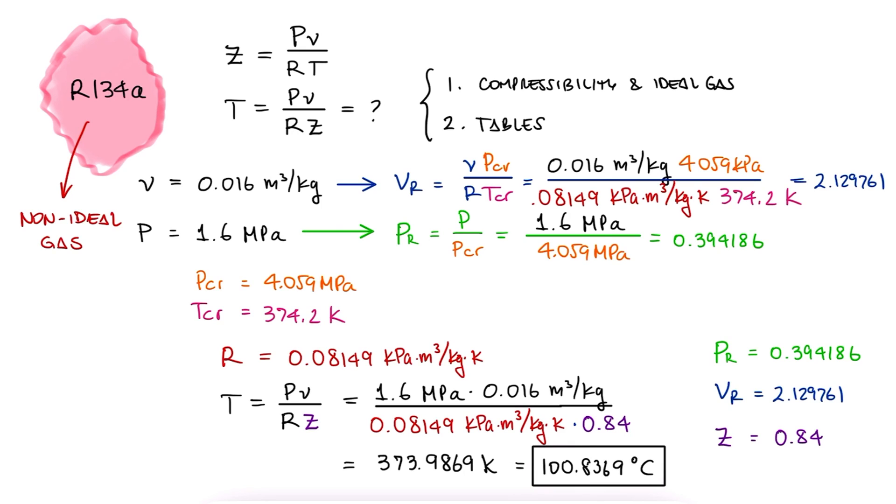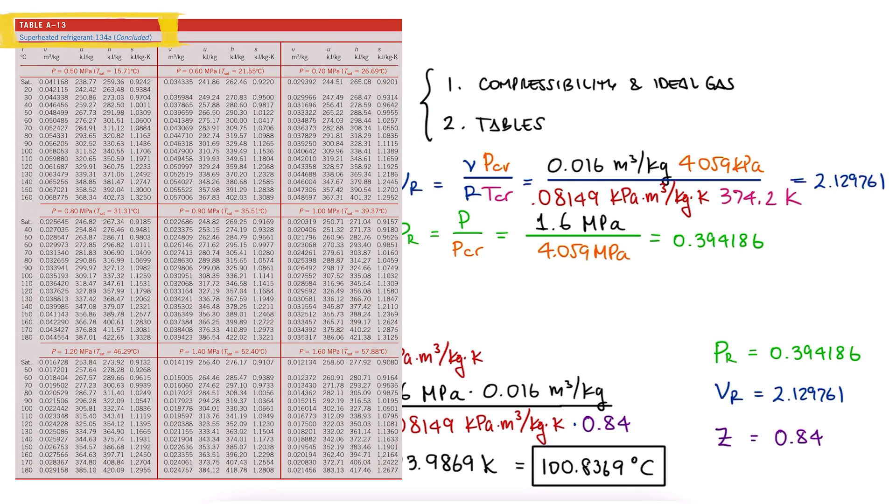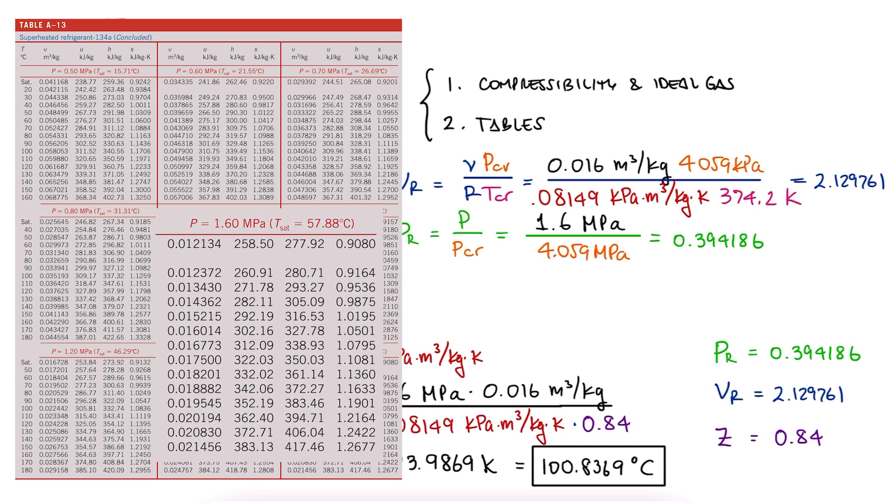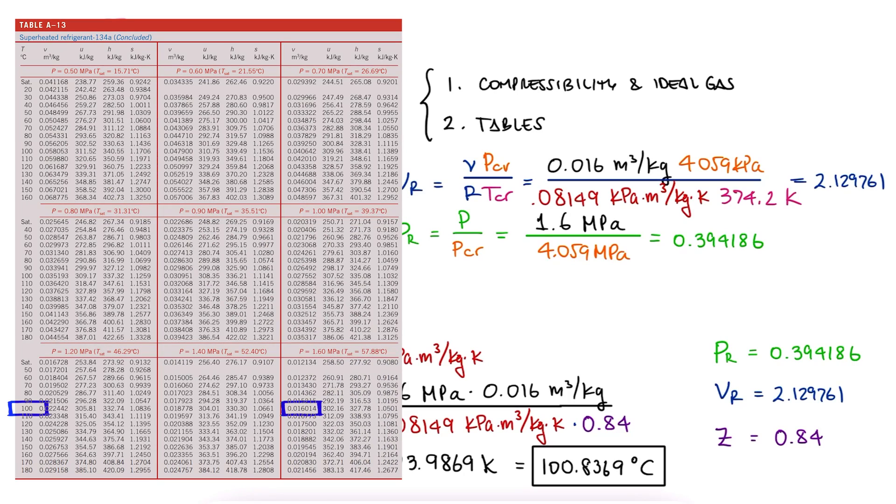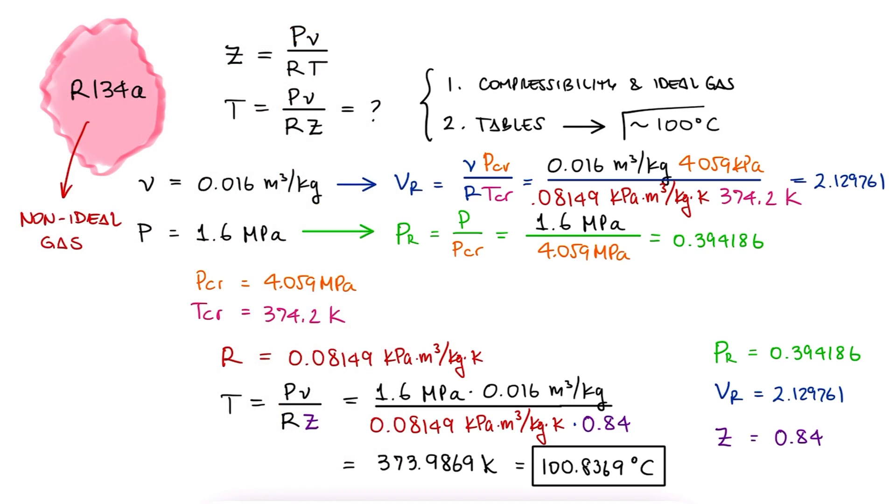If we were to find this using the tables, we would look up the superheated table for R134A, we'd go to a pressure of 1.6 MPa, and look for a specific volume of 0.016. We technically need to interpolate here, but since this value is so close, we'll just assume that the temperature is indeed just shy of 100 degrees Celsius.